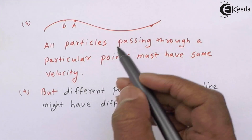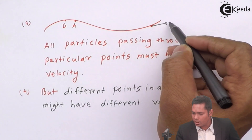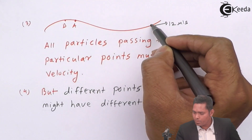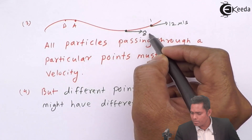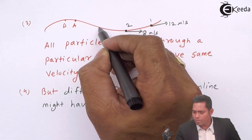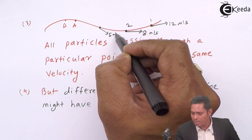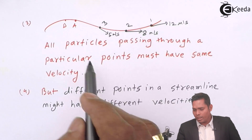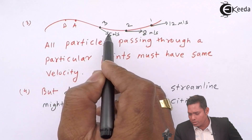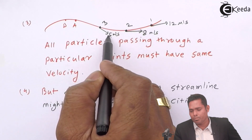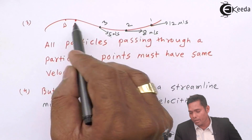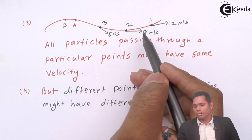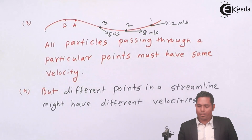For example, suppose at point 1 the velocity is 12 meters per second, at point 2 the velocity is 8 meters per second, and at point 3 the velocity is 5 meters per second. When particle A passes through point 3, it has velocity 5, and B also has velocity 5 at that point. When A passes through point 2, it will have velocity 8, and B passing through point 2 will also have velocity 8. These are the properties of Streamline Flow.